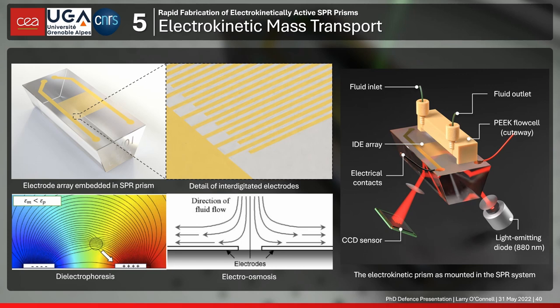This is the same SPR prism as before, but to take advantage of dielectrophoresis and electroosmosis we need to pattern interdigitated electrodes into the surface. Interdigitated electrodes don't touch each other — they're like two combs that are interdigitated, so there's no short circuit. The electrical signals are applied between alternating electrodes. I designed them to be backwards compatible with the SPR devices already in the lab — the same setup as the SPR prisms we normally use, but now with this interdigitated electrode array and electrical contacts for applying signals.